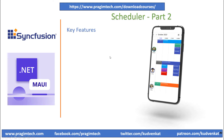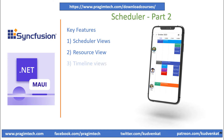In this session, we will focus on creating Resource View which typically provides a visual representation of available resources, often in the form of a calendar or a timeline view. This allows users to see resource availability at a glance. Resource View schedulers are used in a wide range of industries including healthcare for scheduling appointments and patient care, manufacturing for machine and workforce scheduling, hospitality for booking rooms and facilities, and project management for allocating team members and equipment to projects.